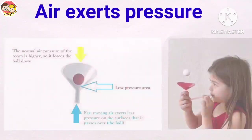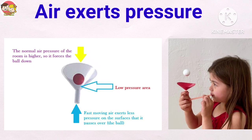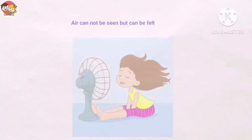Next, air exerts pressure. Look at the diagram carefully. For this experiment you need a ping-pong ball and a funnel. Step one: put the ping-pong ball inside the wide part of the funnel. Step two: blow hard into the narrow end. Step three: you will notice the ball doesn't pop out. This is because as you blow, the air moves faster, but fast-moving air exerts less pressure on the surface it passes over. On the other side, the normal air pressure of the room is higher, so it forces the ball down. Thus it is proved that air exerts pressure.